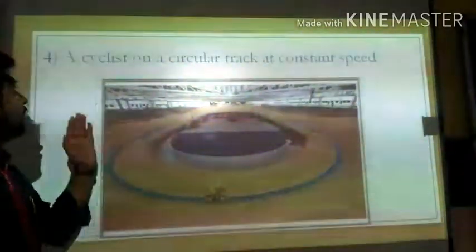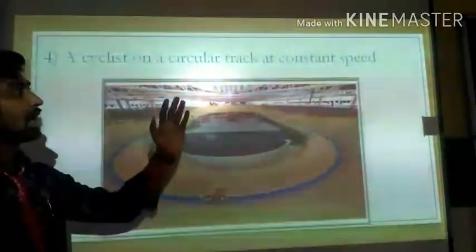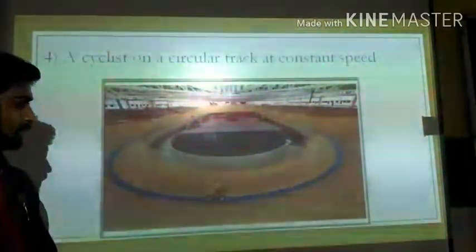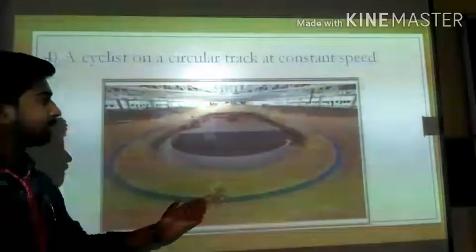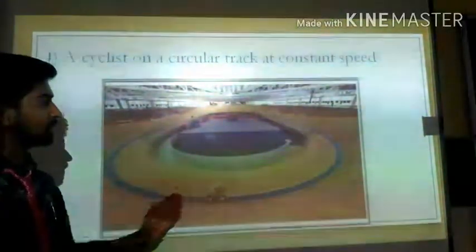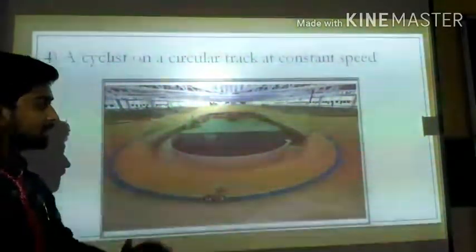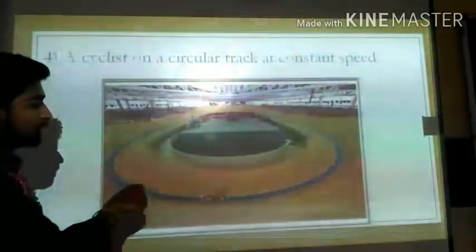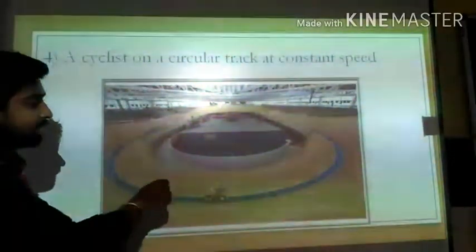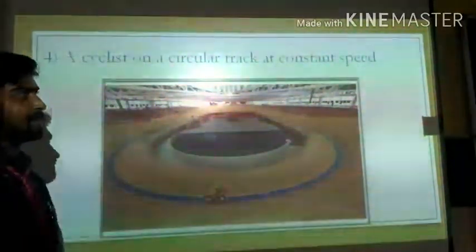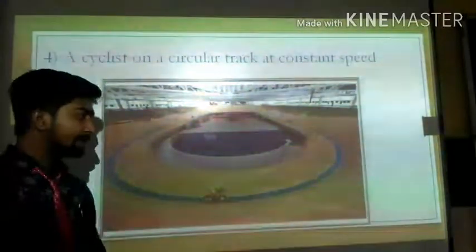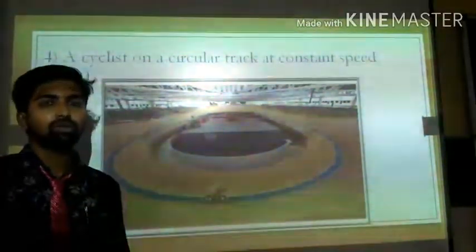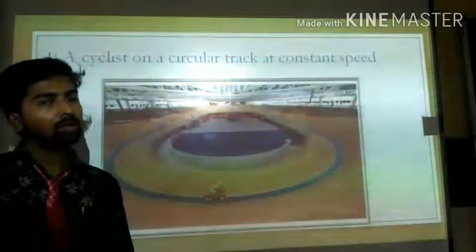Another example: a cyclist on a circular track at a constant speed. We can see that there is a cyclist moving on a circular track at uniform speed. So this cyclist's motion is a uniform circular motion.